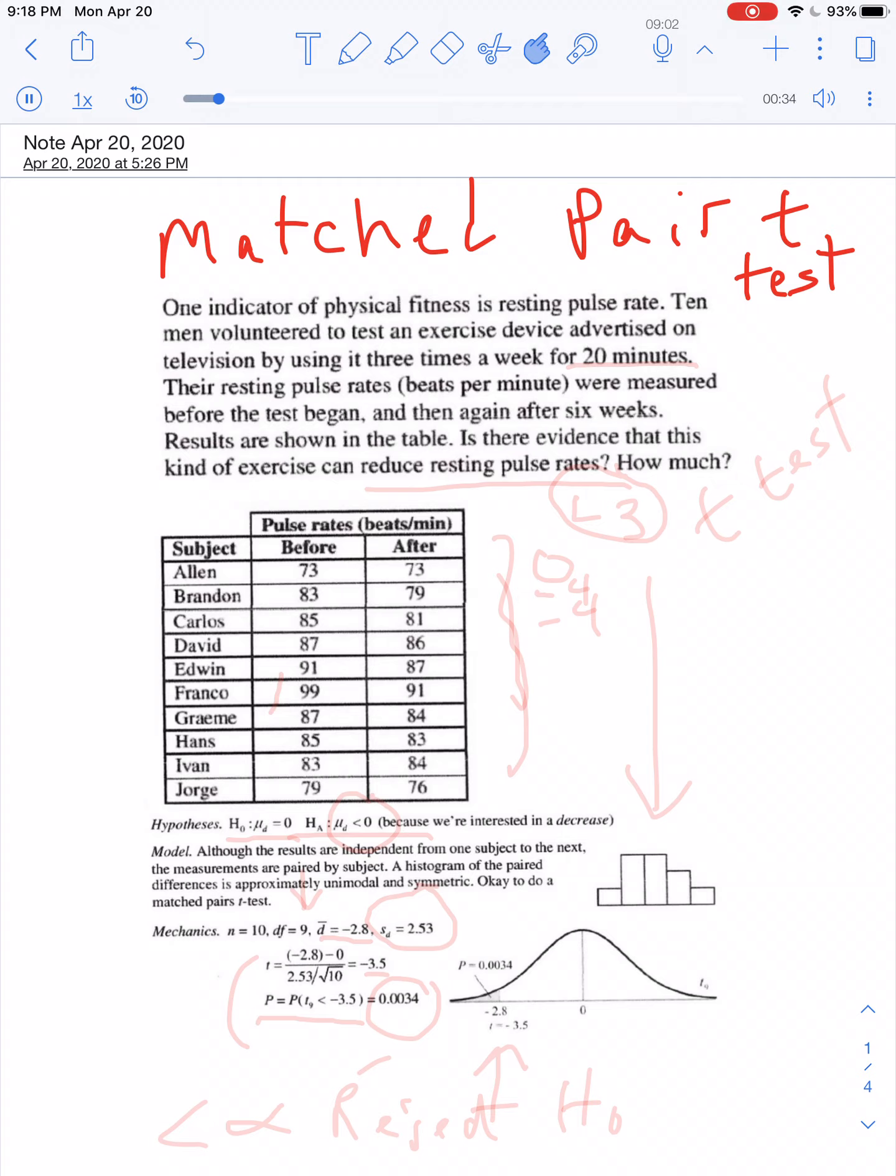So in this situation here, you have ten guys or so, and you have their pulse rate before and after spending 20 minutes of an exercise activity. So they exercise for 20 minutes, and you want to compare the resting pulse rates both before and after to get an idea if exercise is going to reduce the resting pulse rate. So you have your sets of data here.